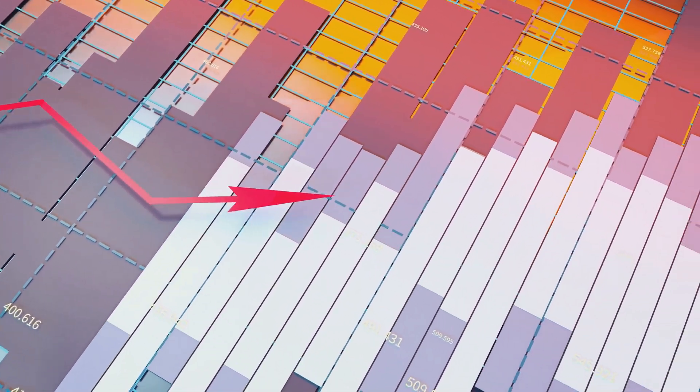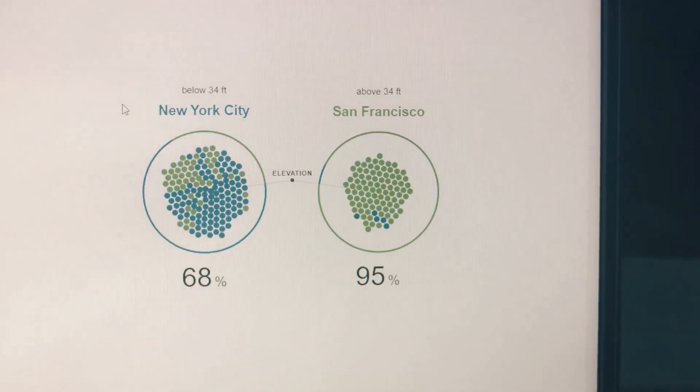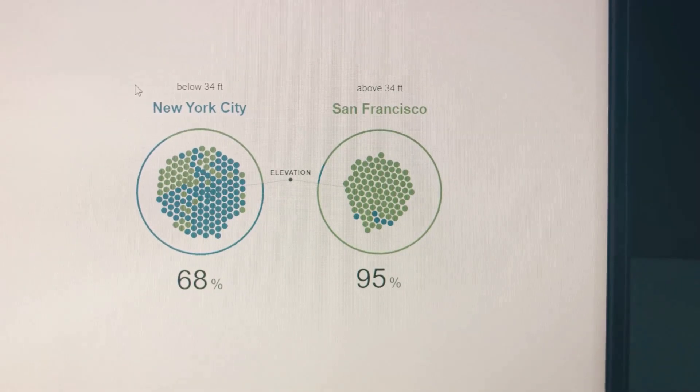So in essence, high kurtosis means more data points are in the tails, indicating more outliers, while low kurtosis suggests fewer outliers.